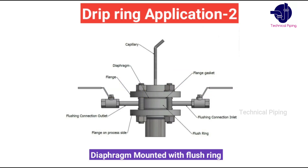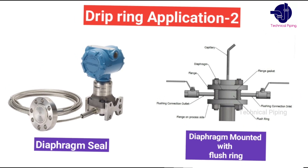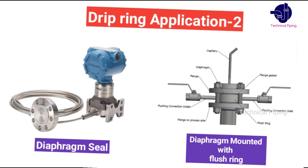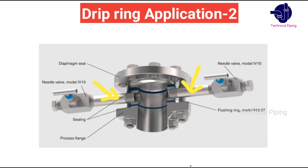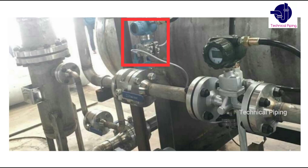When flush rings are used for diaphragm seals, in order to prevent clogging of the instrument connection, the side port of the flush ring allows media to be injected or ejected so the diaphragm can be flushed free of deposits, which would otherwise affect transmitter measurement accuracy.